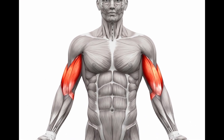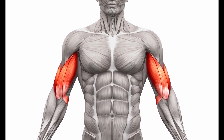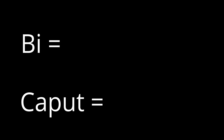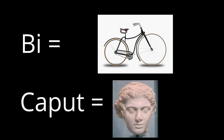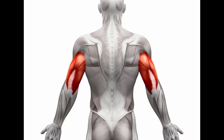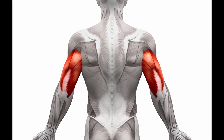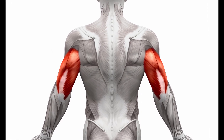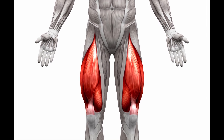Another example, and the subject of this video, is biceps, which means two heads, coming from the Latin bi, meaning two, and ceps, which is the combination form of caput, which means head. This can also be applied to the triceps, where tri means three, and quadriceps, in which quad is four.